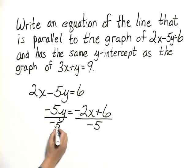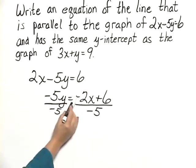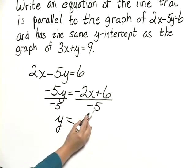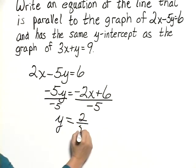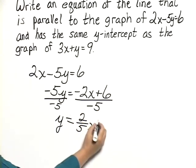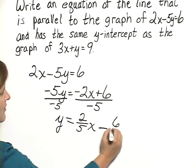Negative 5 divided by negative 5 is 1, so we have y equals. And then we can take this and divide this separately. Negative 2x divided by negative 5 would give me positive 2 fifths x. 6 divided by negative 5 would give me negative 6 fifths.